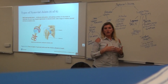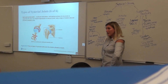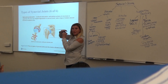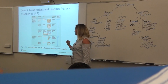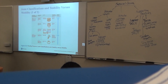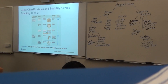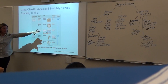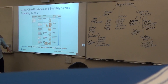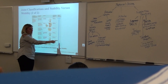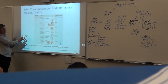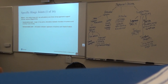A saddle joint is specific to your thumb — where the first metacarpal meets up with the trapezium carpal, they fit together like a saddle and a rider — and that's what allows the special movement of opposition. It's the only place where that happens. Ball and socket joints are how our appendages are held onto our body — we have a ball and socket at our hips and shoulders. There would be a shallow cup with a ball fitting into it. This chart in your book is a good summary of all the different joints, how they're classified, and how they move.